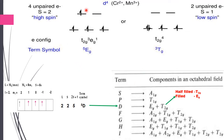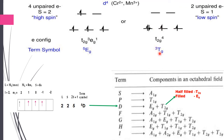Deriving the term symbol for the high-spin d4 system: four unpaired electrons occupy ml = +2, +1, 0, −1; the +1 and −1 cancel, leaving ML = 2, so L = 2, which is the D term. Spin multiplicity = 5, giving 5D. Since the t2g is less than half-filled, the Mulliken symbol gives T2g, so the ground term is 5T2g. For low spin d4 with spin multiplicity 3, since t2g is completely filled and one electron paired, the term becomes 3Eg.